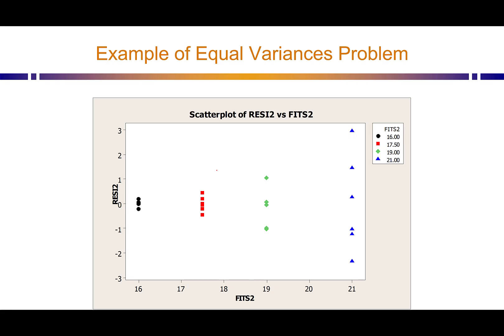Here's an example of what a problem could look like for equal variances. In this case, it looks like the larger the fitted values, the higher the variance — a funnel-shaped pattern. This means an assumption for ANOVA is not being met.